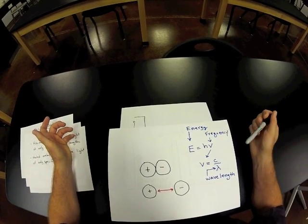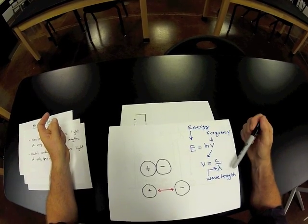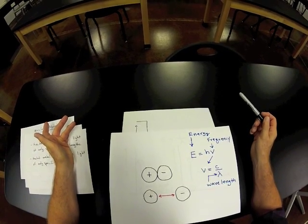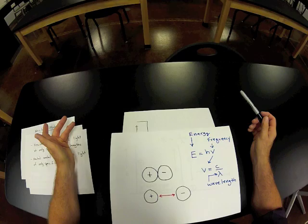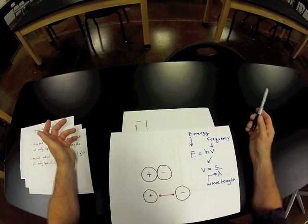Don't worry about this H. That's just a constant that's called Planck's constant. And the frequency is related to the wavelength of the light, the light that we see when the light is being released from these metals and compounds and light that's being absorbed to cause these transitions.